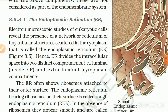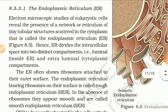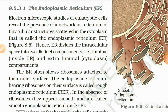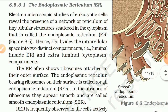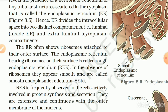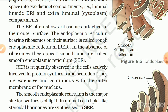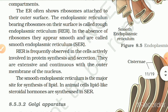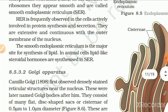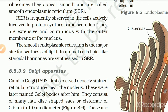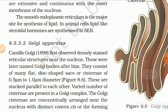8.5.3.1 Endoplasmic Reticulum. Electron microscopic studies of eukaryotic cells reveal a network or reticulum of tiny tubular structures scattered in the cytoplasm, called the endoplasmic reticulum (ER). The ER divides the intracellular space into two distinct compartments: luminal (inside the ER) and extra-luminal cytoplasmic. The ER often shows ribosomes attached to its outer surface; this is called rough endoplasmic reticulum (RER). In the absence of ribosomes, they appear smooth and are called smooth endoplasmic reticulum (SER). RER is frequently observed in cells actively involved in protein synthesis and secretion, and is continuous with the outer membrane of the nucleus.